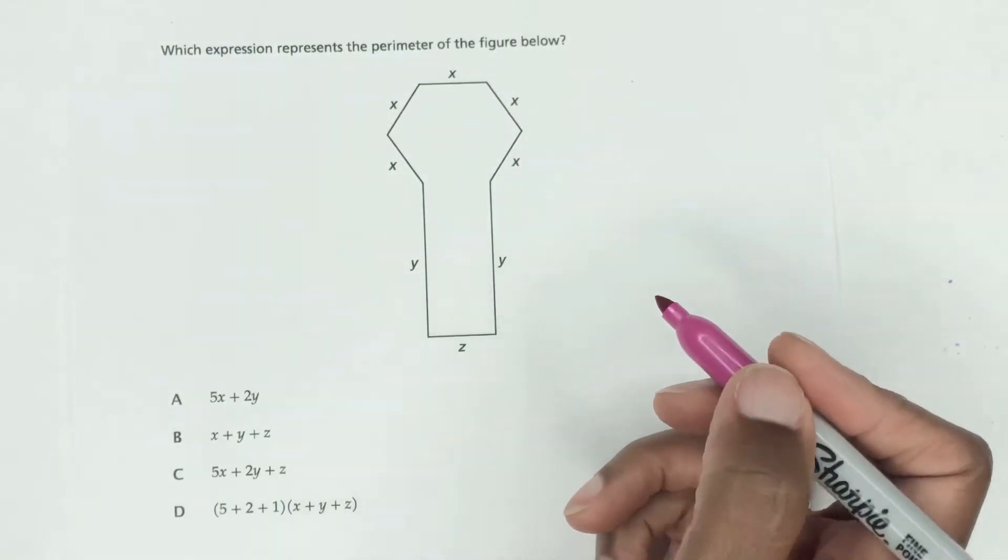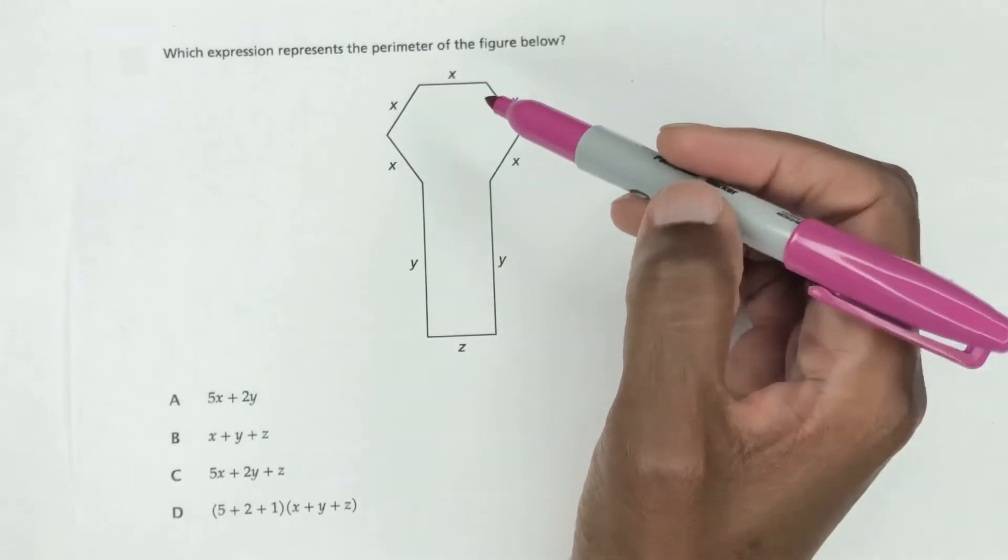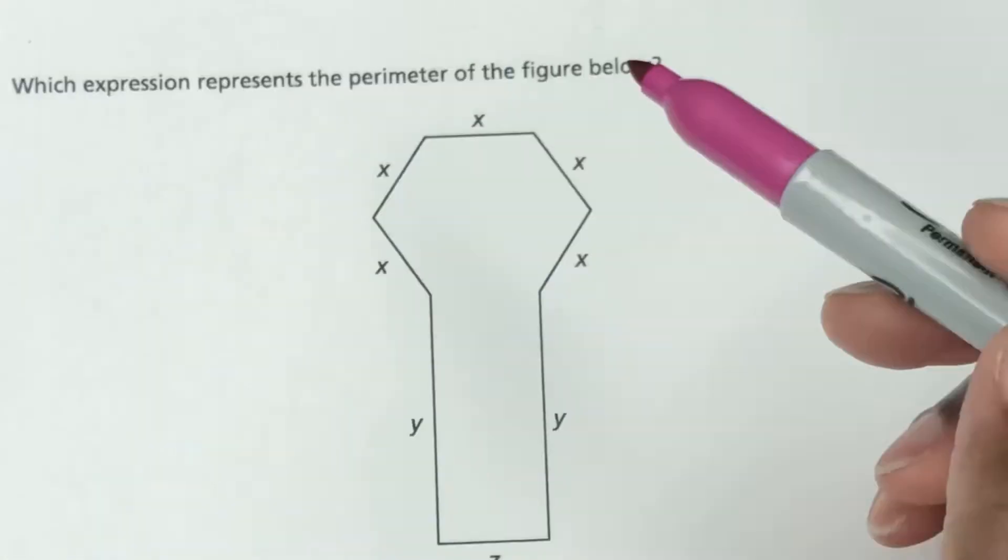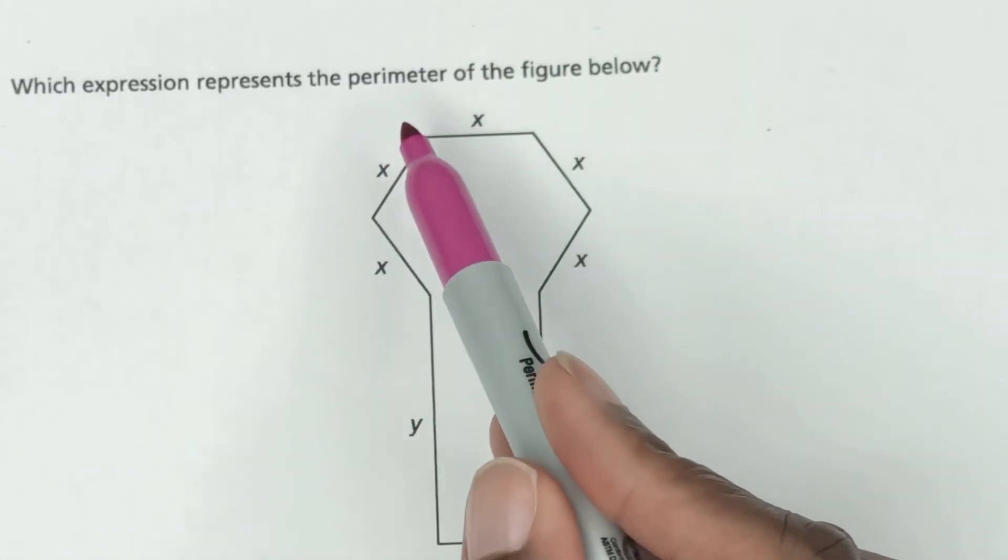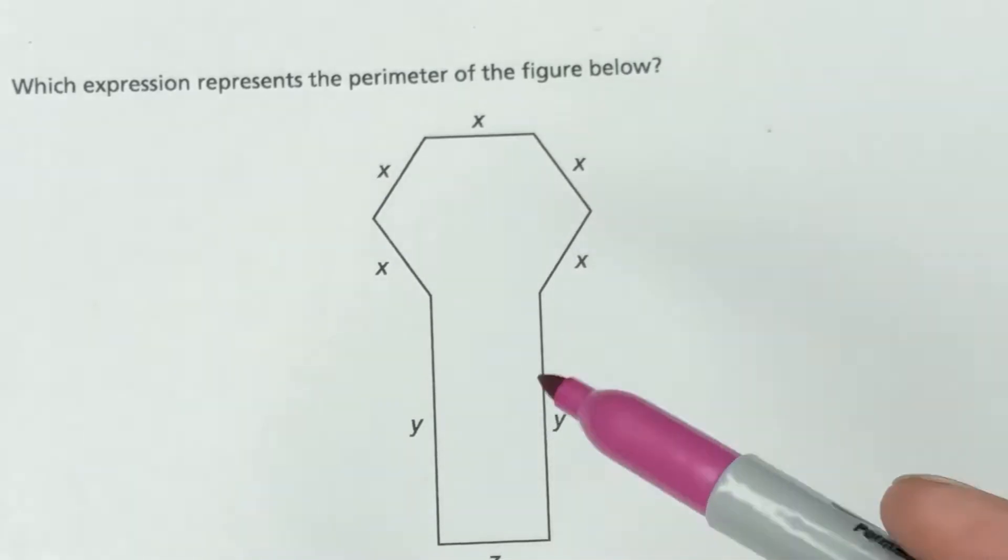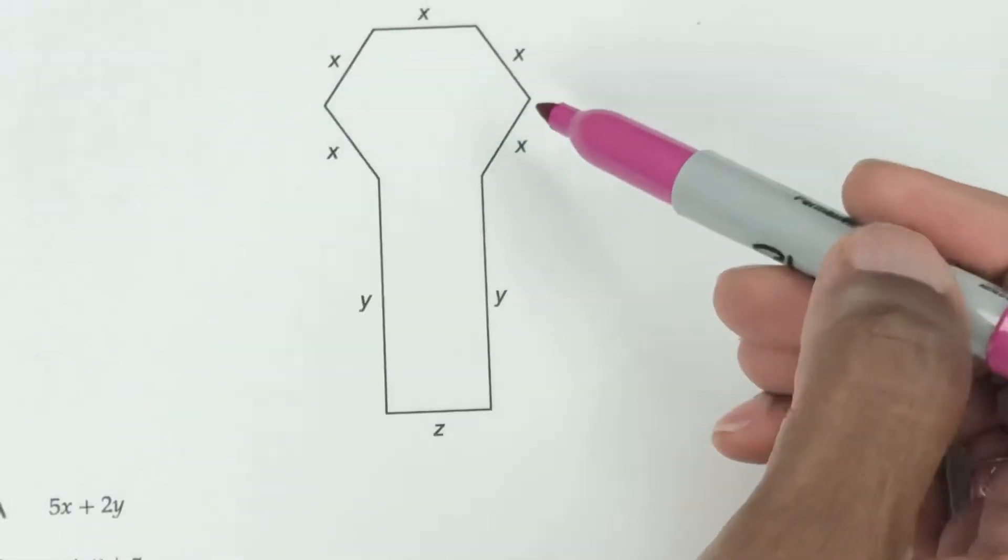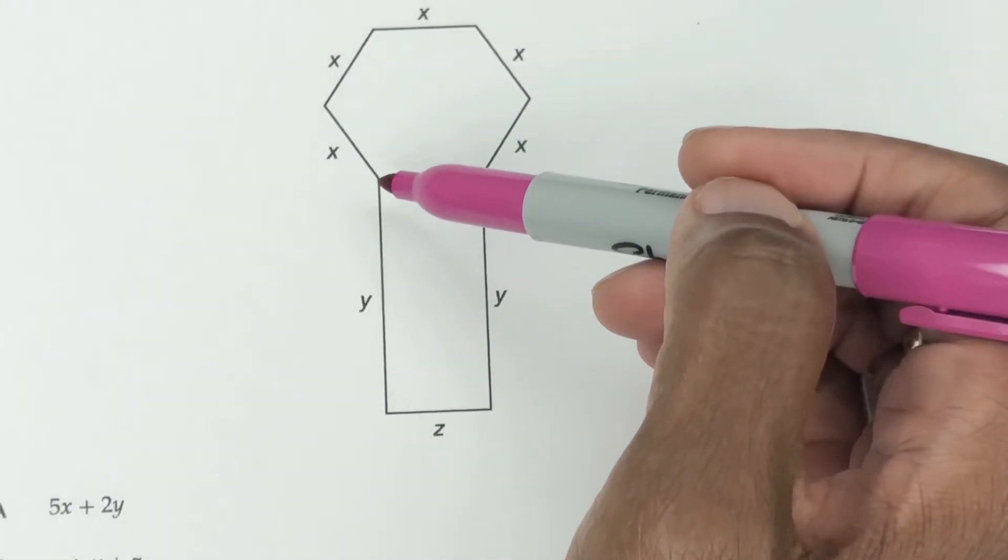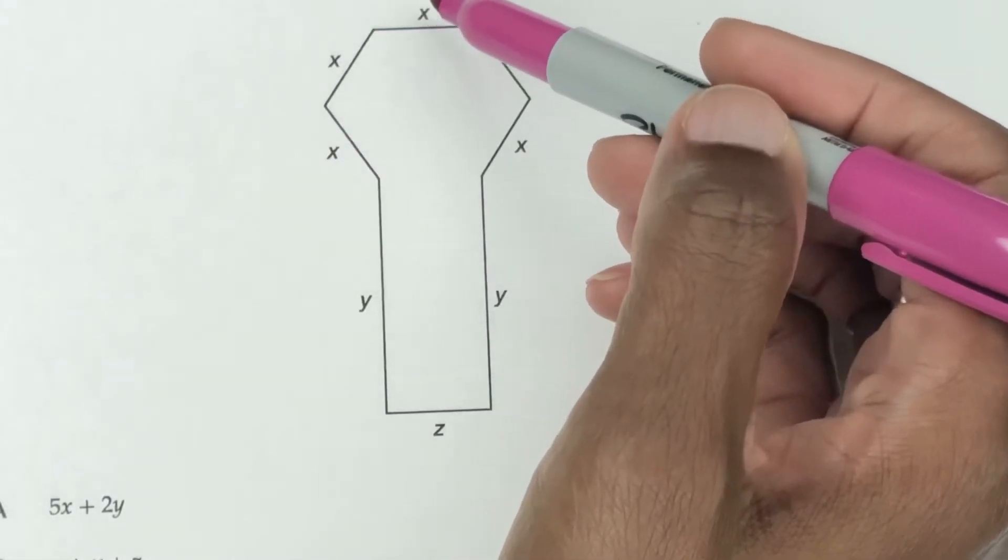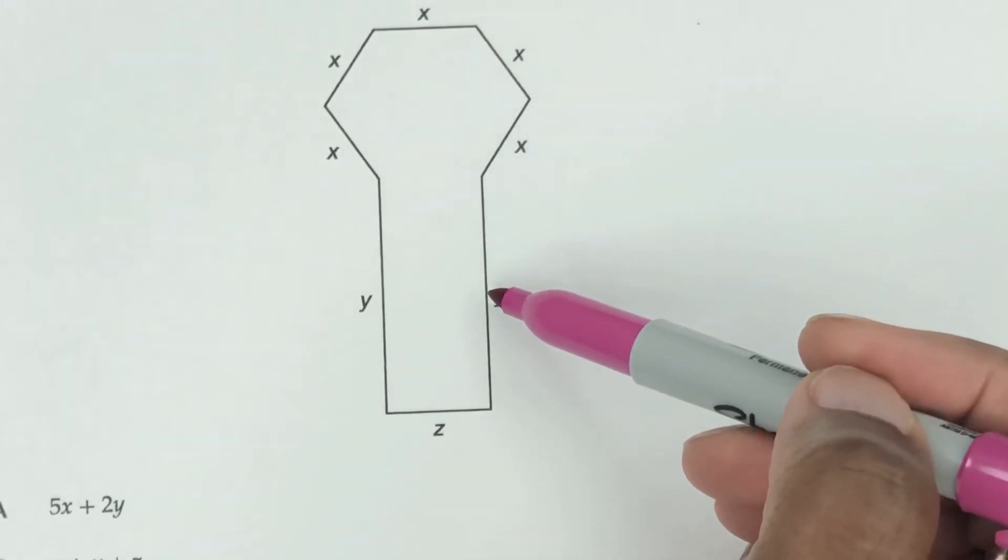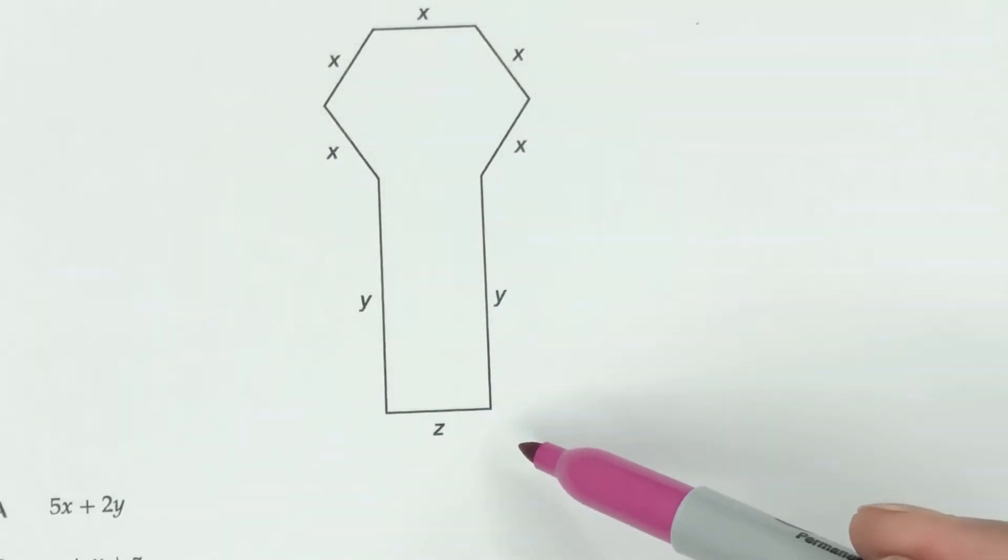This second expression question comes with an actual diagram here. Which expression represents the perimeter of the figure below? So you have this figure and each side has a different variable. You got y going around to the right, you have x's all over this side, and then coming back down you have a y then you have the z underneath.